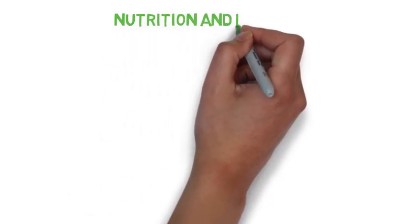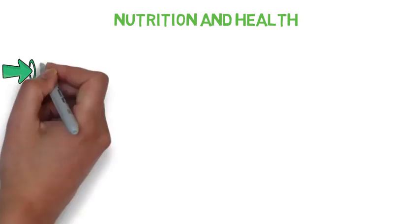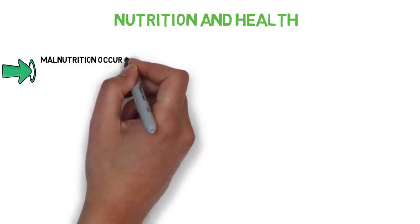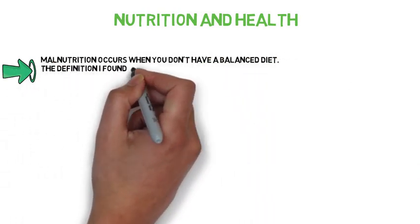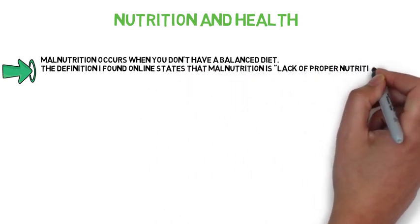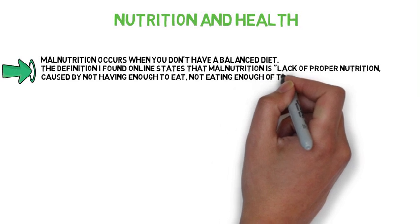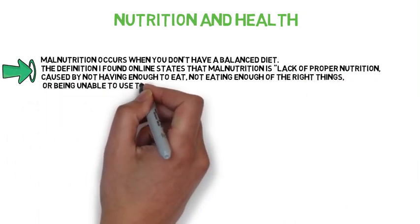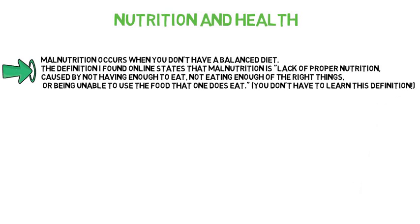Nutrition and health. Malnutrition occurs when you don't have a balanced diet. The definition states that malnutrition is lack of proper nutrition caused by not having enough to eat, not eating enough of the right things, or being unable to use the food that one does eat.